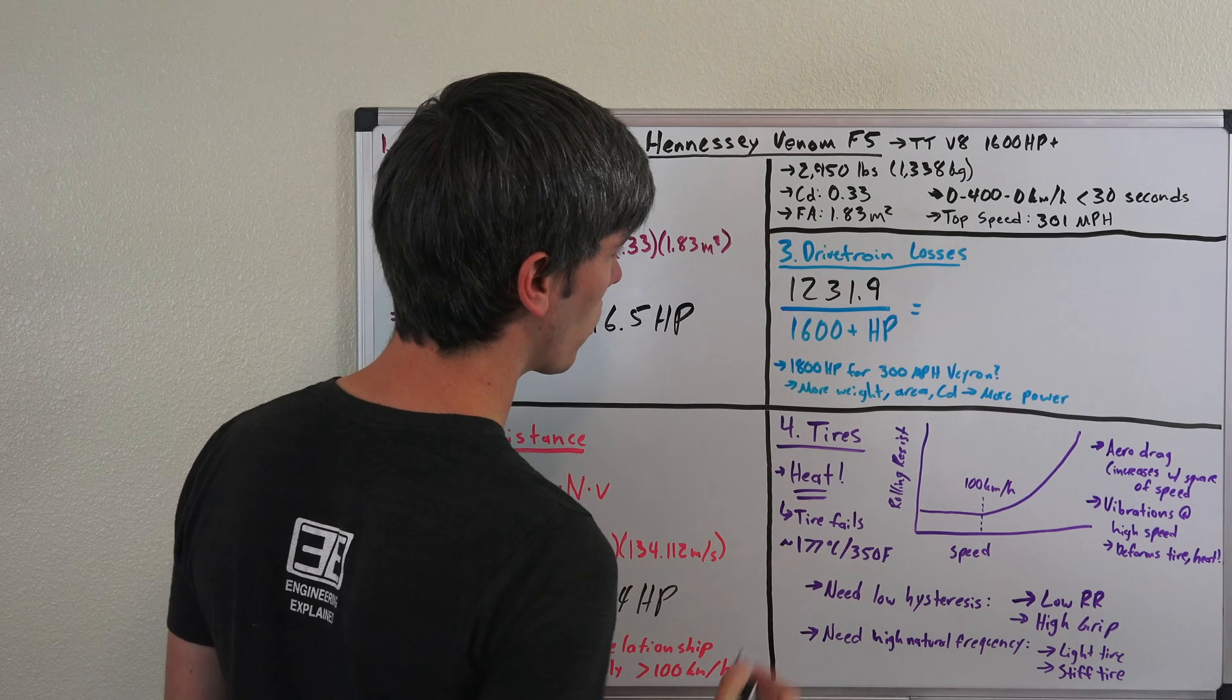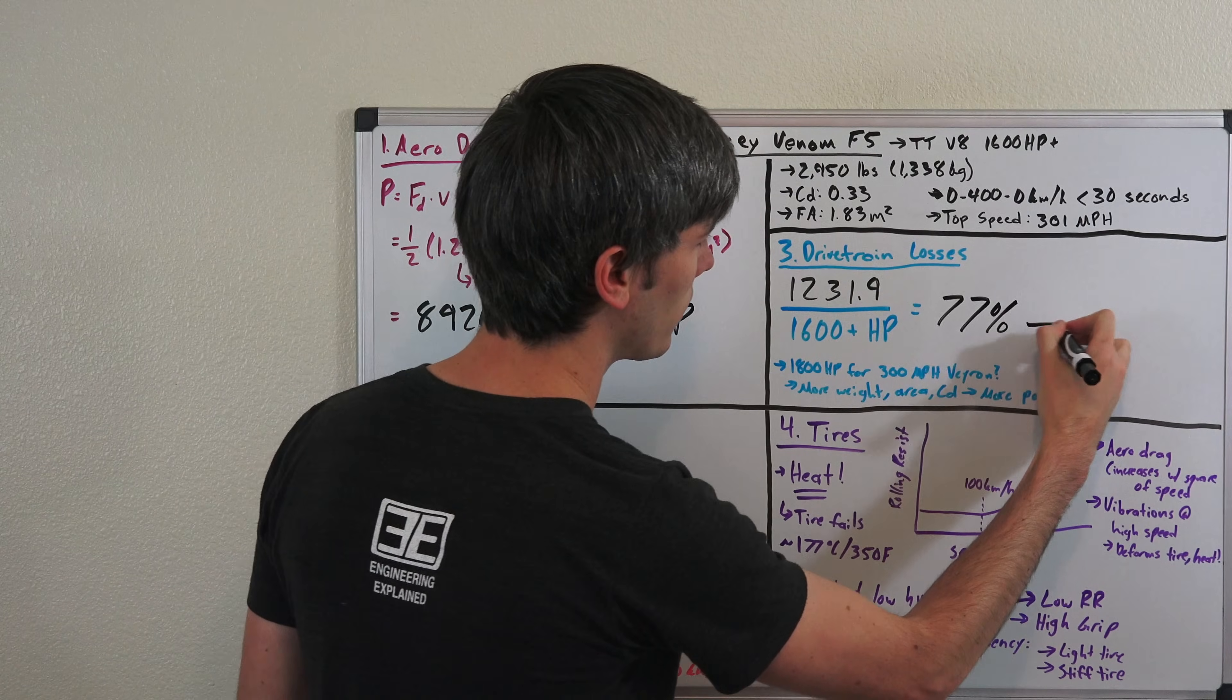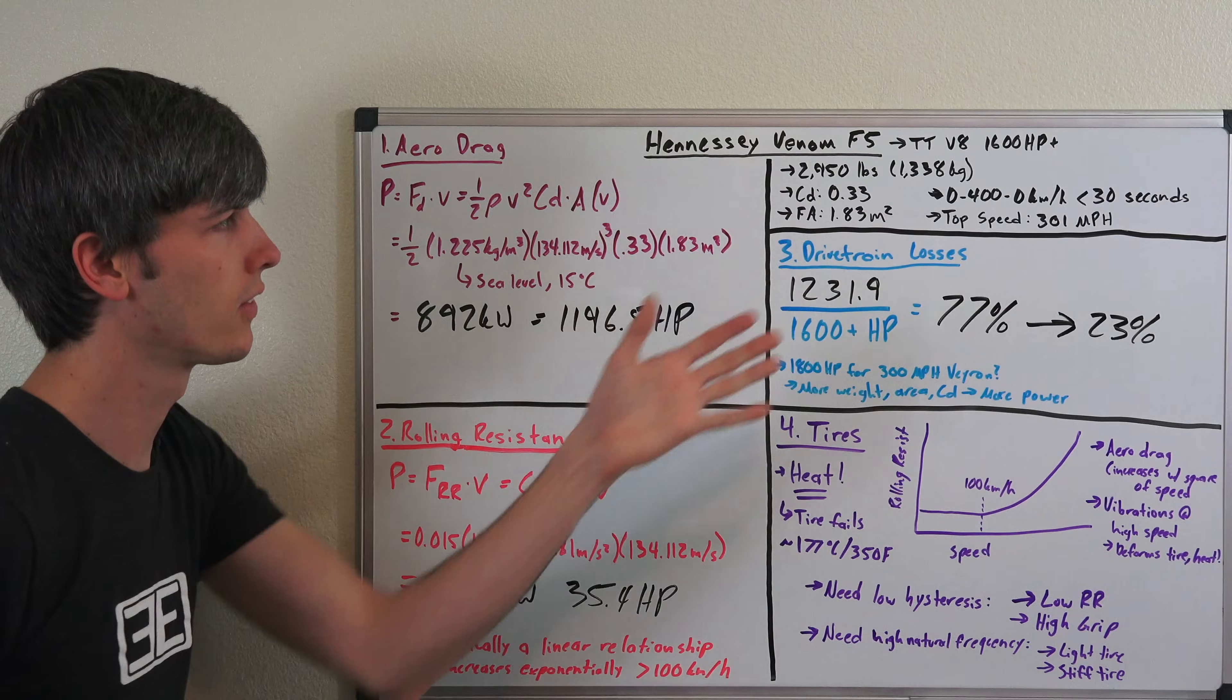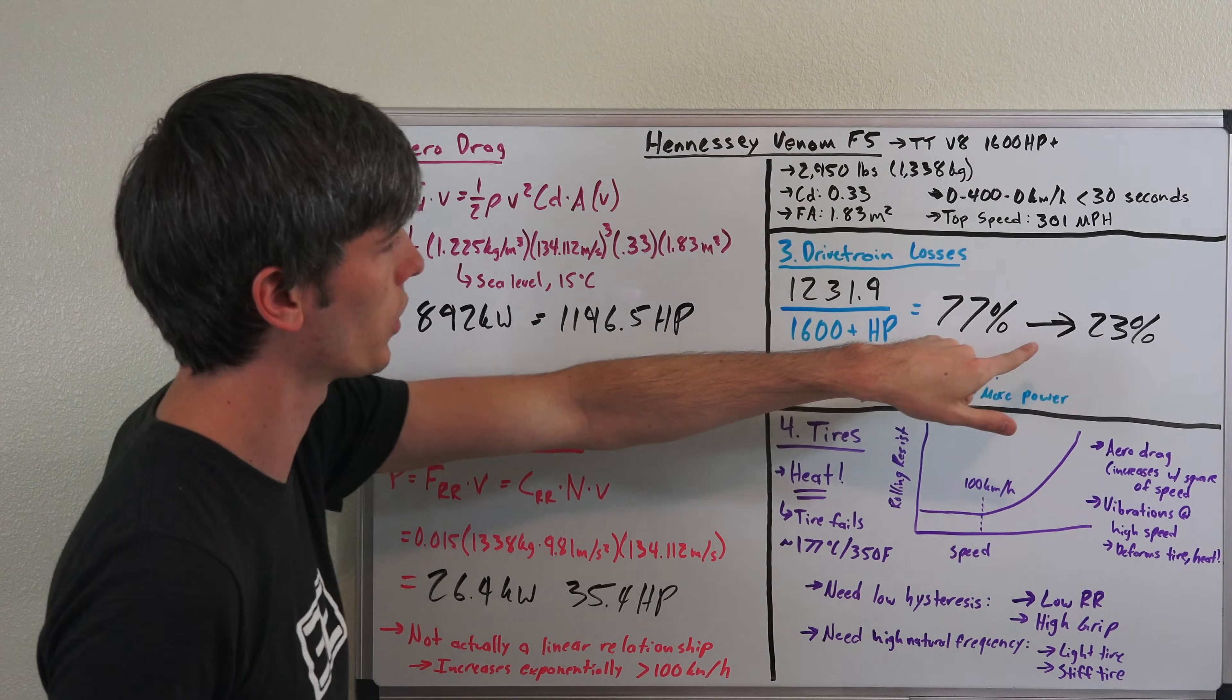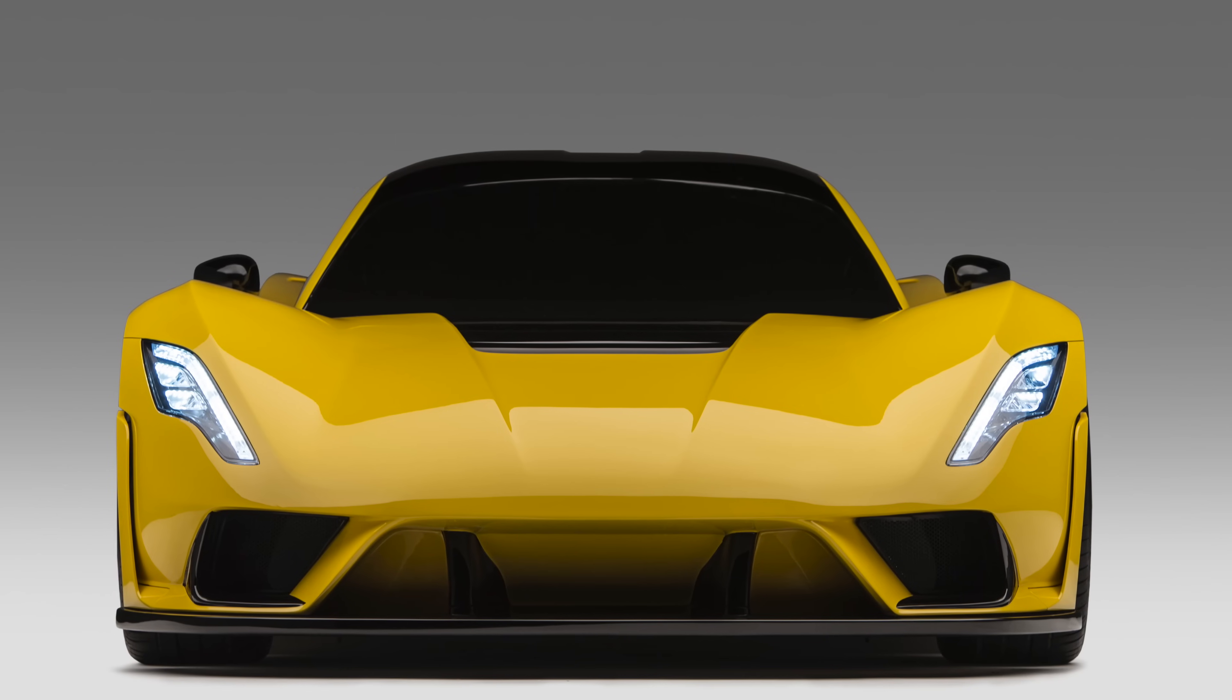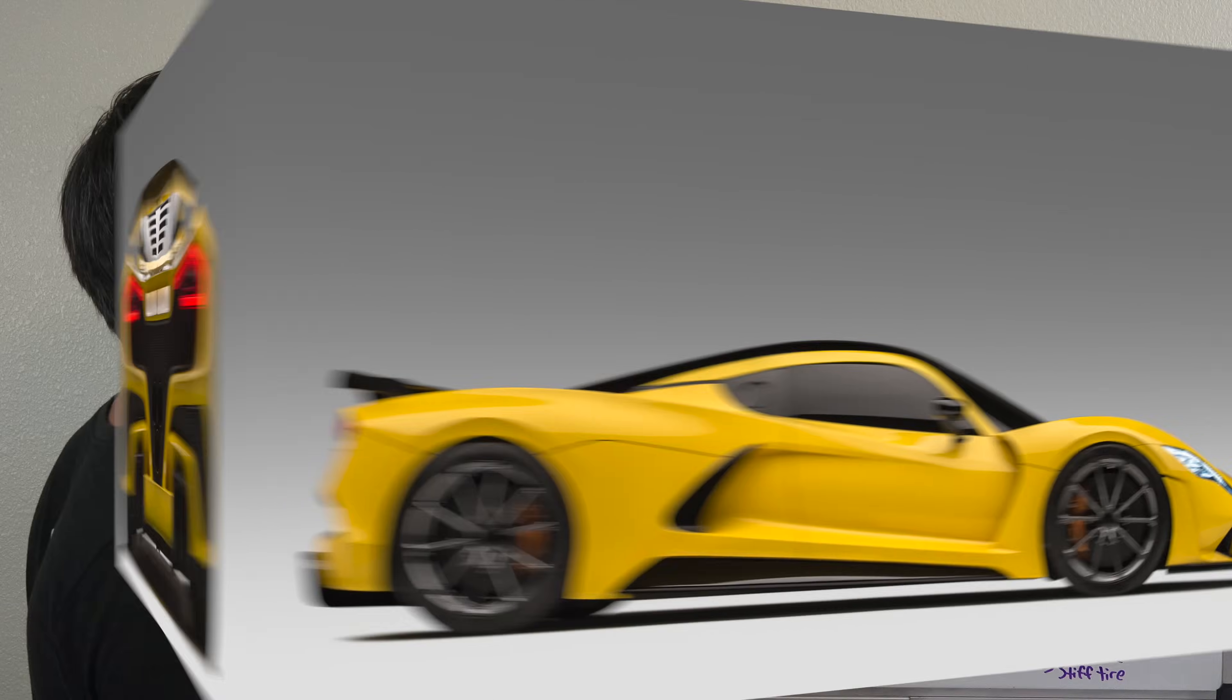Add that to 1,196.5 and that gives us 1,231.9 horsepower. We do the math, divide that by 1,600, that gives us about 77%. So what that tells us is we have 23% drivetrain losses which we could accept and still reach 300 miles per hour. And it's very unlikely this car in real-world driving is going to have 23% drivetrain losses. It'll probably be significantly less than that, and as a result it shouldn't have a problem reaching 300 miles per hour from a power standpoint. It should have plenty of reserve power.